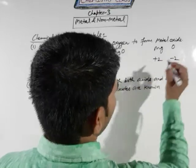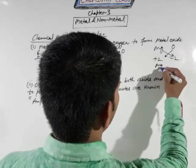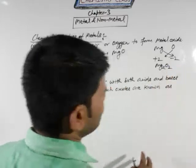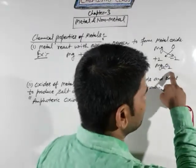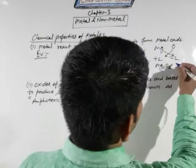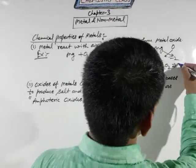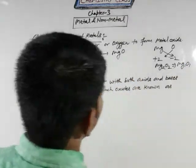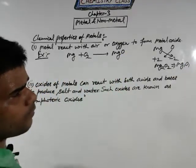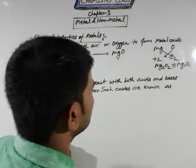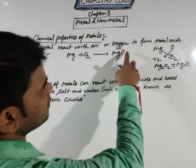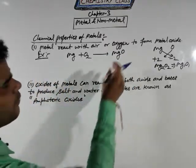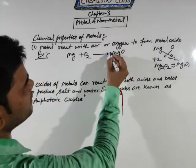When you combine Mg (+2) and O (-2) with each other, it gives the product Mg₂O₂. But in this case, this is a whole number and the digit 2 cancels with 2, so it becomes Mg₁O₁, which we write as MgO.